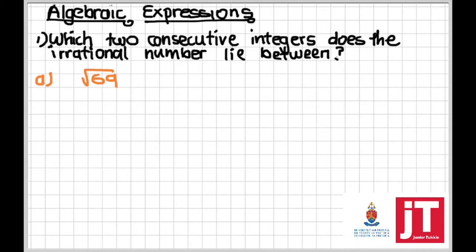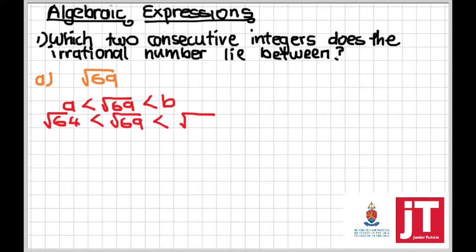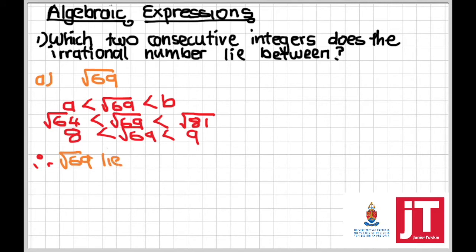The two perfect squares closest to 69 are 64 and 81. We present our solution as: a < √69 < b, where a and b are the two consecutive integers. Using perfect squares: √64 < √69 < √81, which simplifies to 8 < √69 < 9. Therefore, the square root of 69 lies between the integers 8 and 9.